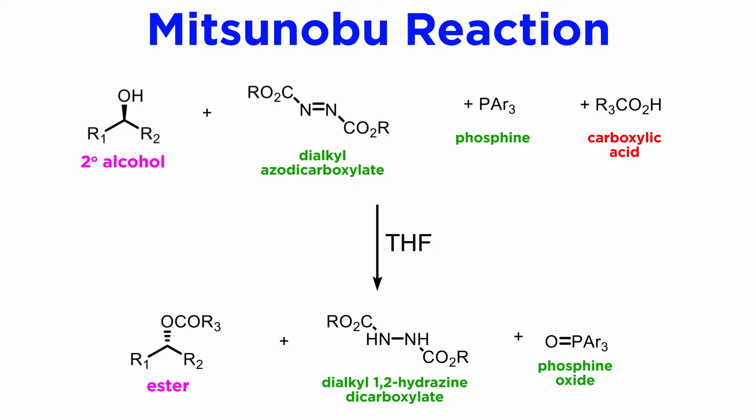Let us spend a minute to see what has happened here. The substitution of an OH group with a carboxylate requires trapping of an equivalent of water. The water molecule has been formally split into molecular hydrogen, which has reduced the azo compound to a hydrazine derivative, and atomic oxygen, which has gone to oxidize the phosphine moiety.